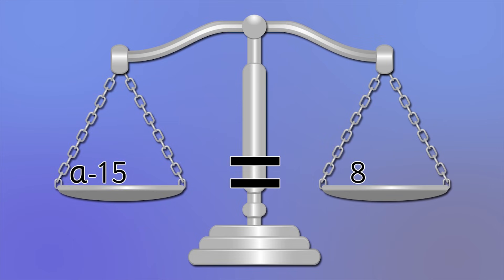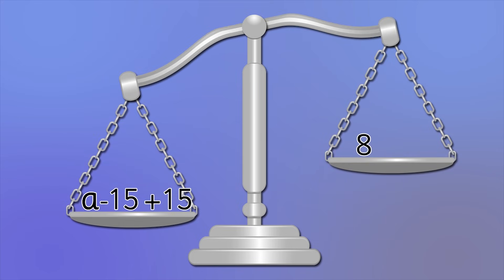The opposite of minus 15 is plus 15. So to isolate a, we have to add 15. But look, that tips the scale. The two sides are no longer the same.